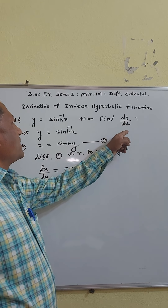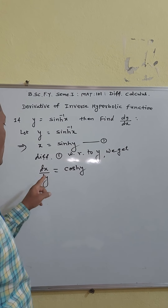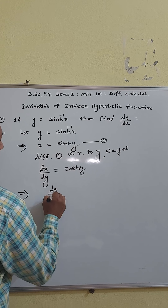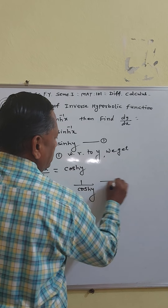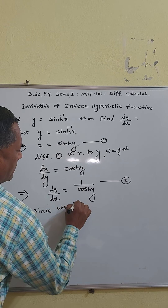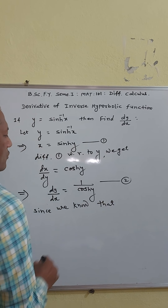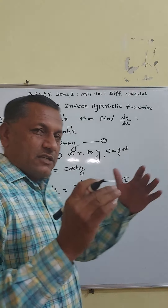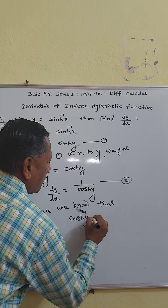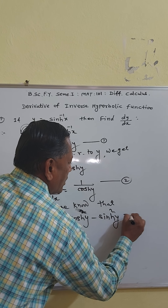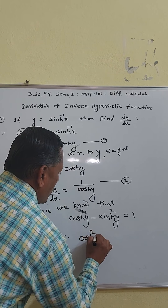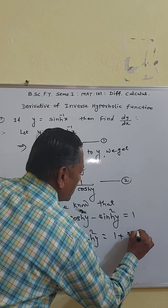But we need the derivative of sinh⁻¹x with respect to x. So we take the reciprocal of both sides. Taking the reciprocal, we get dy/dx equals 1 upon cosh y. Since we know that cosh²y minus sinh²y equals 1, with variable y: cosh²y minus sinh²y equals 1.